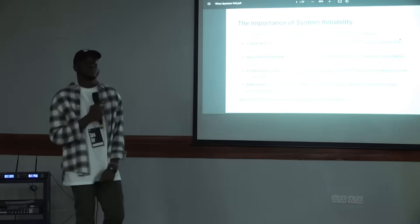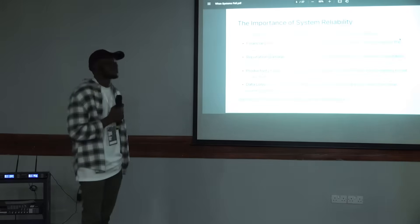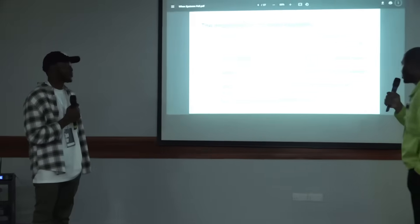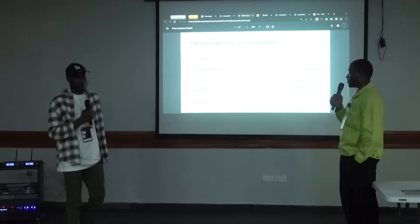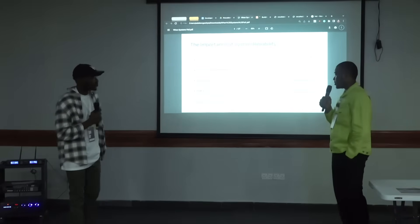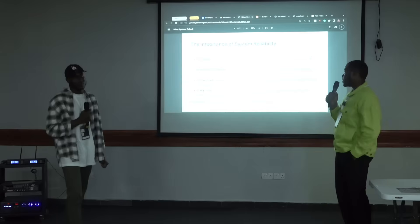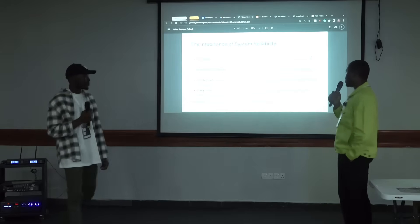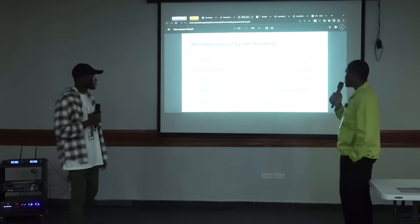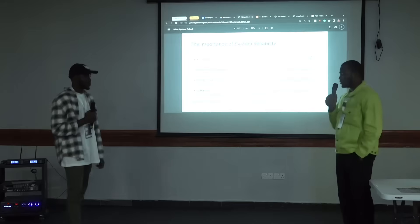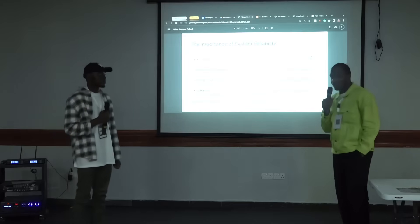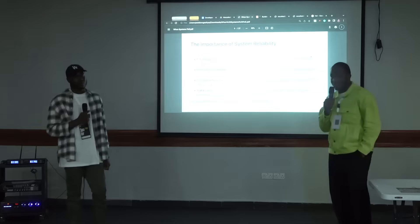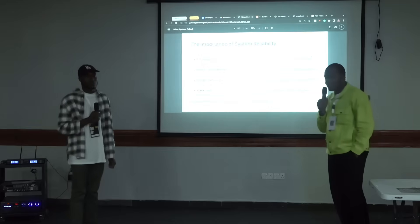So now we'll be talking about the importance of system reliability. System reliability is critical — when systems fail, the impacts can be profound. Some real-world impacts of system failures are financial loss. Interruptions can result in loss of sales and extra cost to resolve the issues. Like when UBA fails me multiple times, I'm eventually going to take my money away from them and move to another bank.